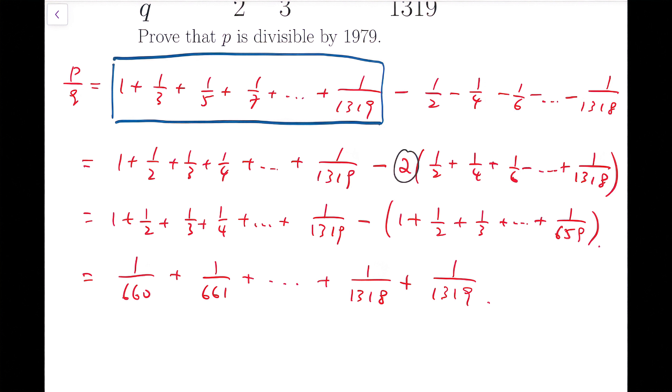So this expression looks fine, but we're still quite far from what we have to achieve. We have to make sure that the numerator is divisible by 1979, this number. But we couldn't even see the number from our fraction series.